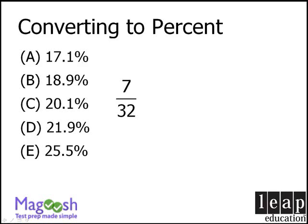Our technique will be to rewrite this fraction as a new fraction with denominator 100. To perform this conversion, we must multiply 32 by approximately 3. Unfortunately, 32 times 3 does not equal 100 — 32 times 3 equals 96. So we must multiply 32 by a number slightly larger than 3. We'll use this notation to represent that.